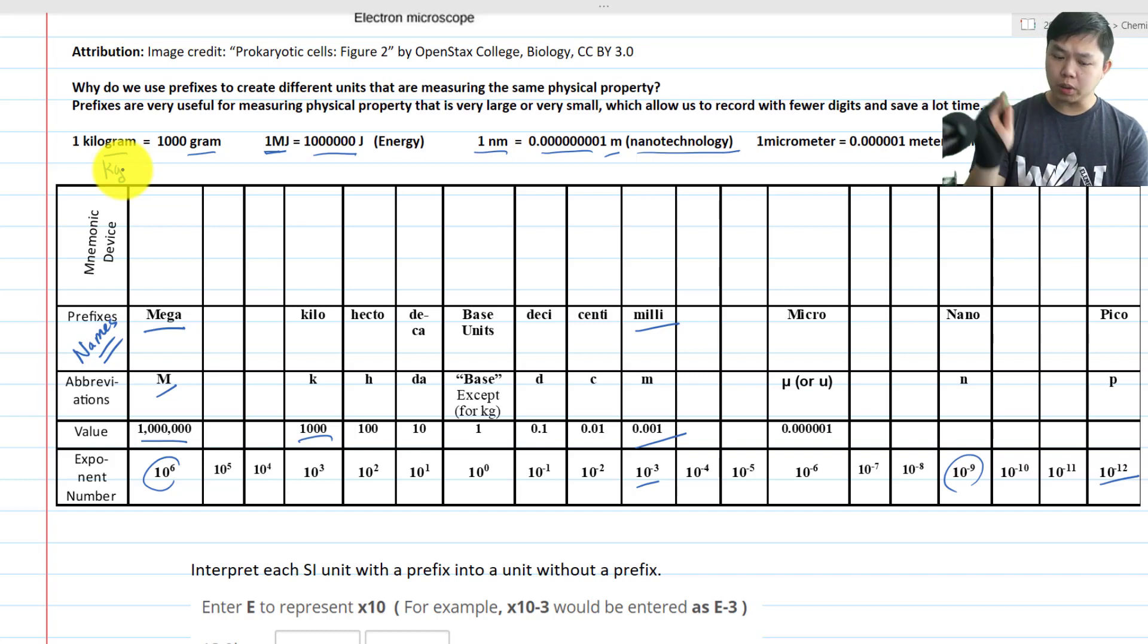And then, of course, here's the most important thing, and the most challenging aspect, is that you have to remember that each prefix represents a value, and the exponential number is what you need to remember. Mega is 10 to the 6th. Now let's go over all of them. Kilo, K, 10 to the 3rd.